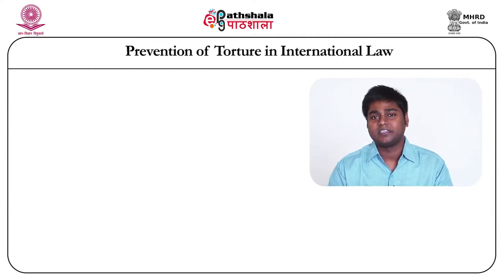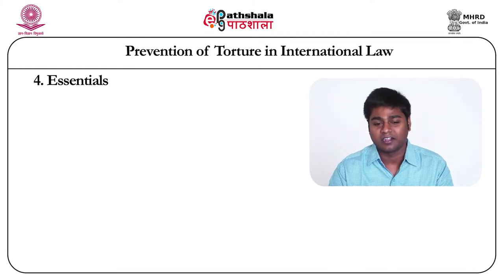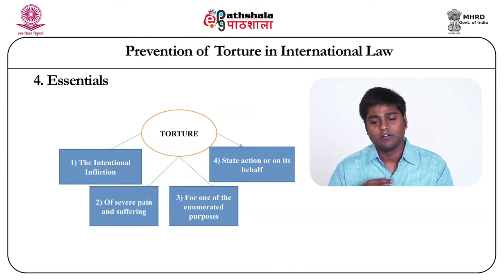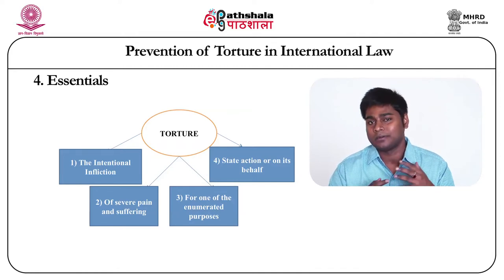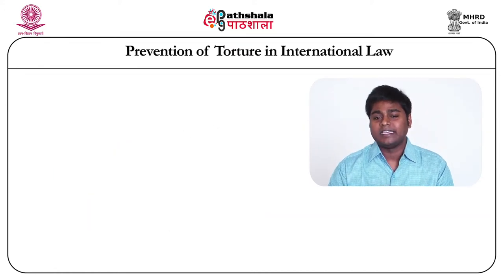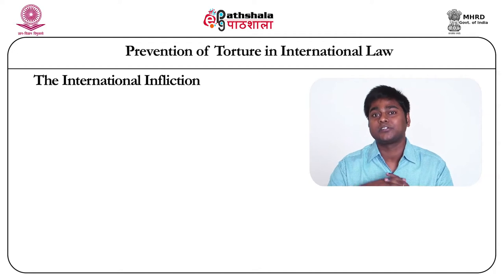The four important essentials or ingredients of the definition of torture are: first, intentional infliction; second, causing of severe pain and suffering; third, for one of the enumerated purposes; and fourth, state action or on its behalf. Regarding intentional infliction — the action must be committed intentionally. If not committed intentionally, it will not amount to torture.